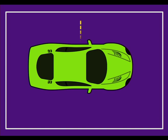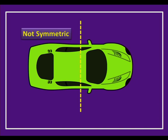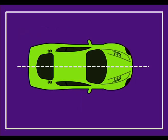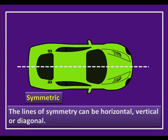Let us take more examples to understand lines of symmetry better. Take a look at this curve. Drawing a vertical line — if you fold along it, it would not be symmetric. But that doesn't mean the object is not symmetric at all. Drawing a horizontal line and folding along it, both sides coincide and form congruent parts. So the lines of symmetry can be horizontal, vertical, or even diagonal.